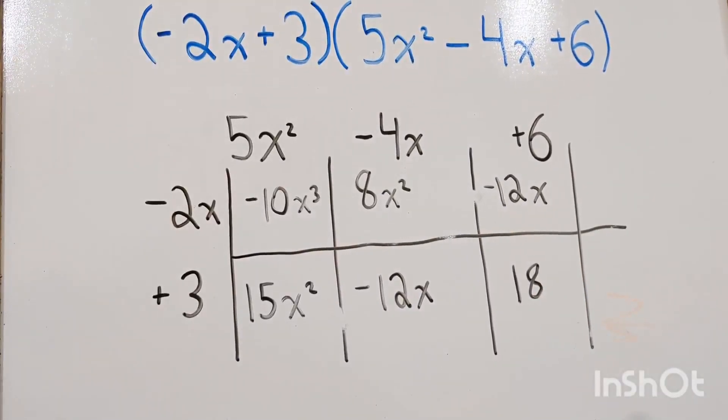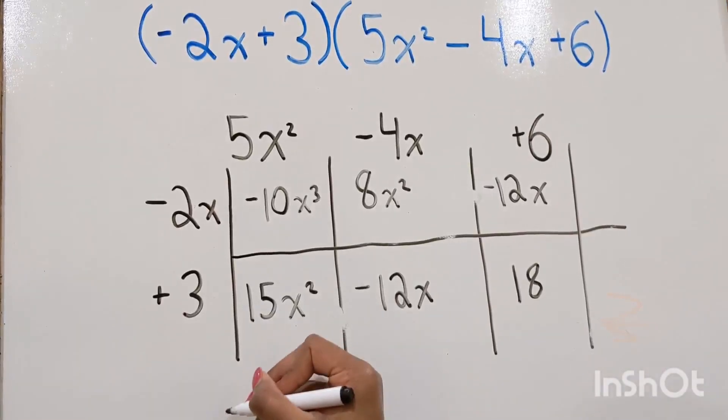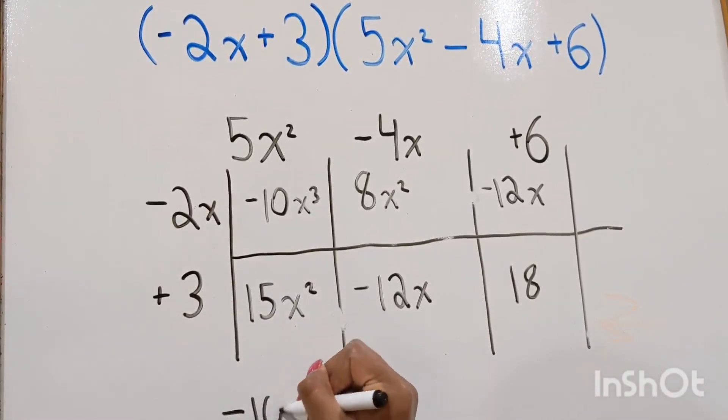And then all you have to do is add up all the like terms and write it down. So negative 10x cubed.